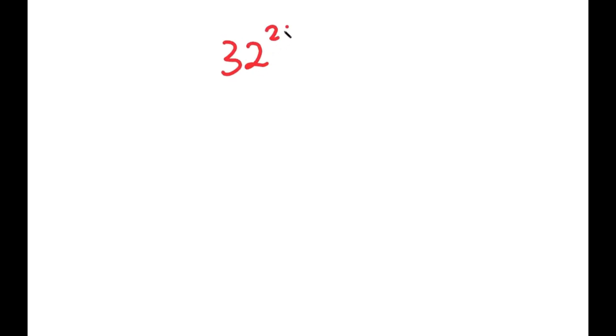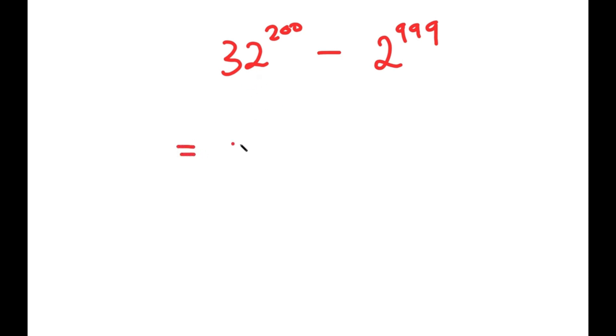In this video, I'm going to solve the problem 32 to the power of 200 minus 2 to the power of 999. To solve this, I'm going to first rewrite 32 as 2 to the power of 5.